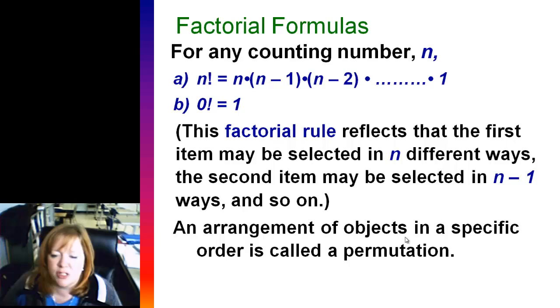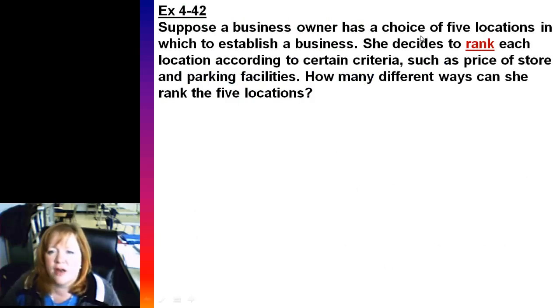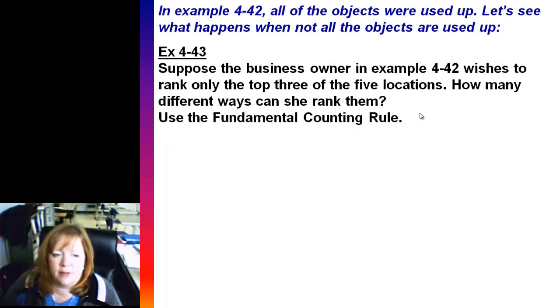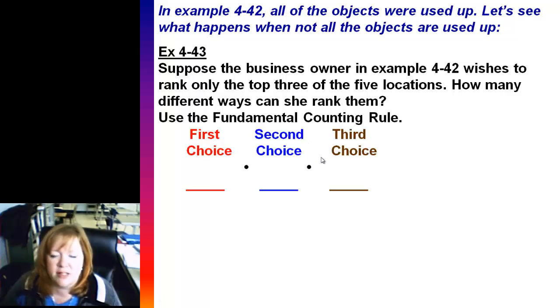An arrangement of objects in a specific order is called a permutation. So suppose a business owner has a choice of five locations and she's going to rank those five locations, all five of them in order from best to worst. How many different ways can she rank the five locations? So that leads us to five factorial, which is five times four times three times two times one, which equals 120 possible rankings. What happens if they don't pick all five to rank? For example, she only wants to do the top three of her locations. In this case, we're going to use the fundamental counting rule. I've got a first choice, a second choice, and a third choice. So this would become five times four times three. If I multiply that all out, there's 60 possible rankings.